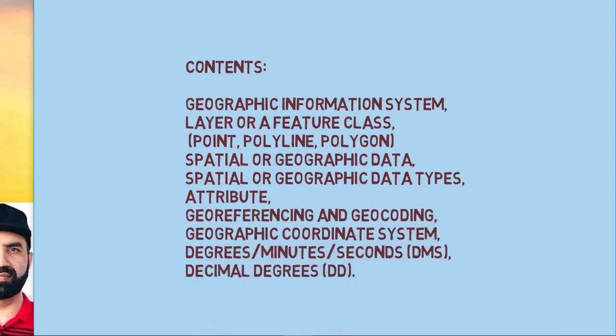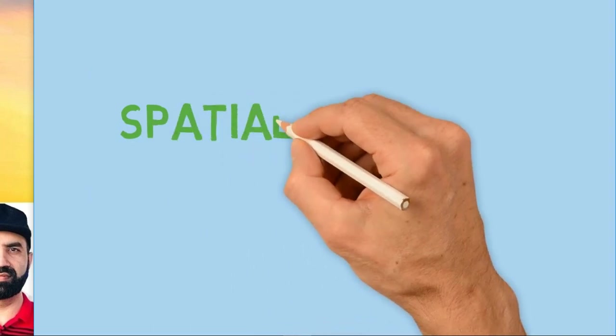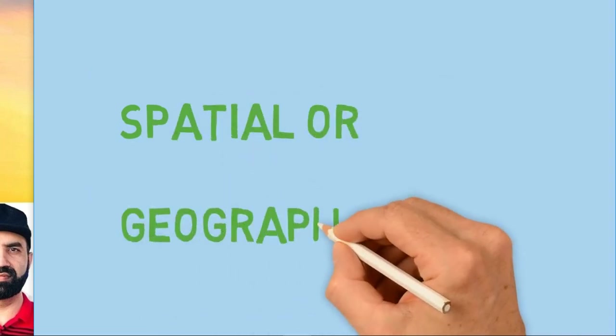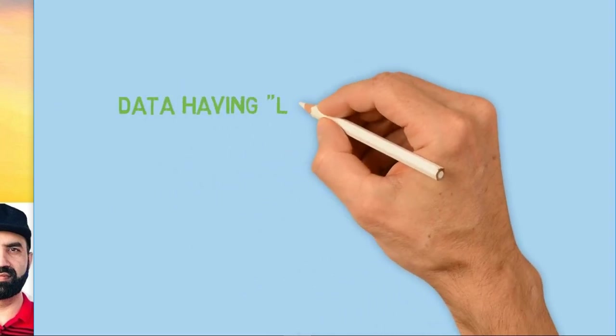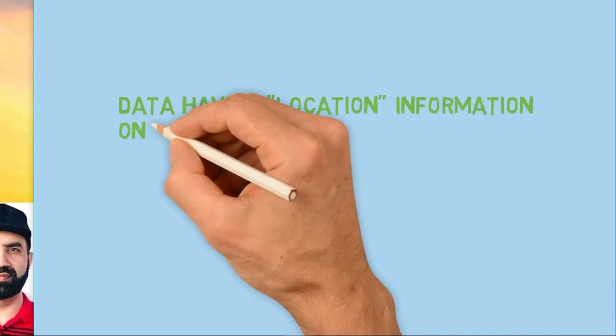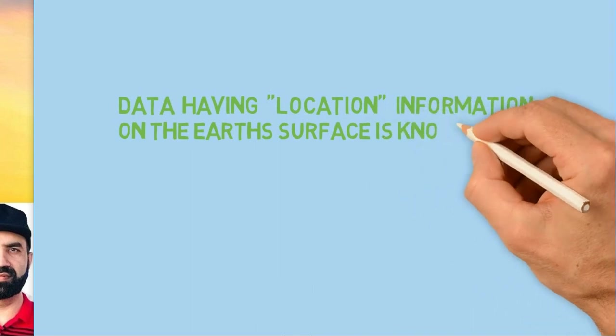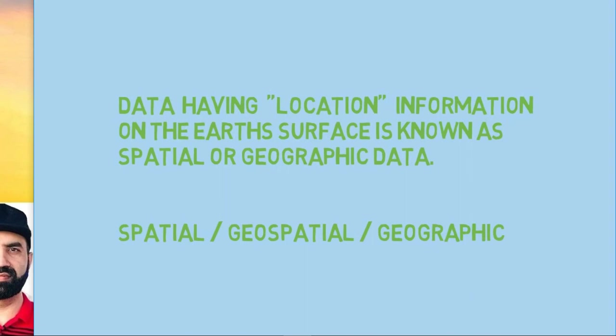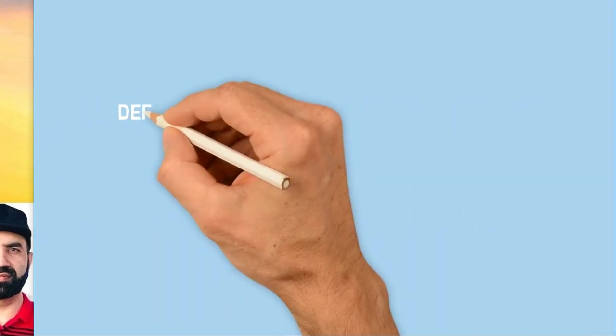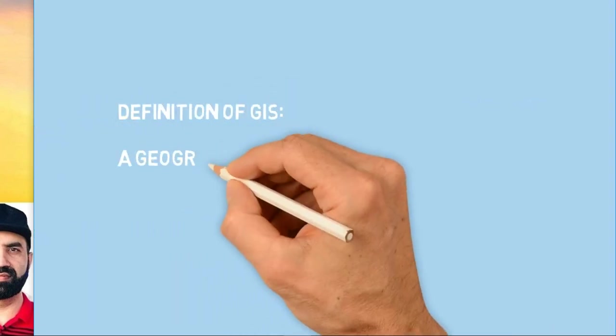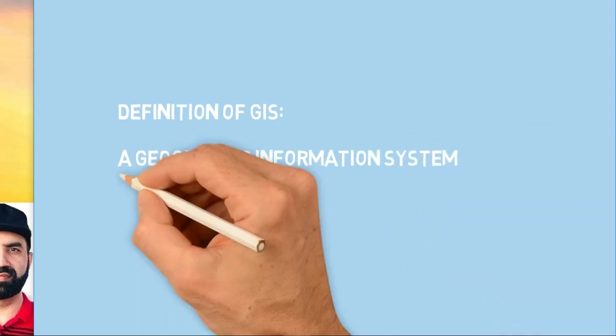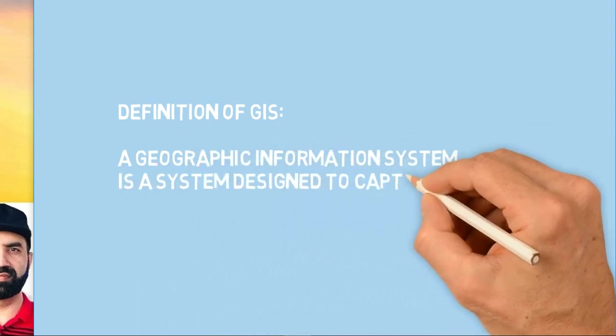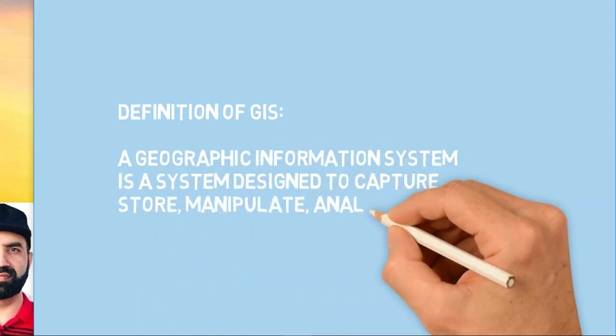So what is spatial or geographic data? Data having location information on the earth's surface is known as spatial or geographic data. Now let's come to the definition of GIS. A GIS is a system to handle such spatial or geographic data.